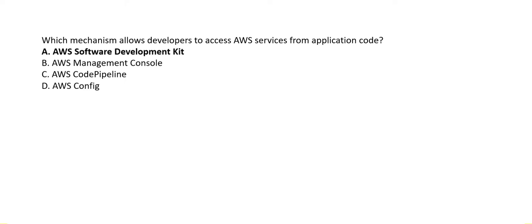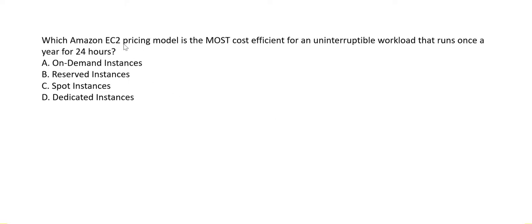Next question: which Amazon EC2 pricing model is the most cost-efficient for an uninterruptible workload that runs once a year for 24 hours? The keywords here are 'most cost-efficient.' Looking at the options, reserved instances appear cost-efficient for uninterruptible workloads, and option A seems correct at first glance.